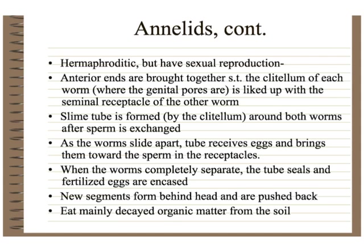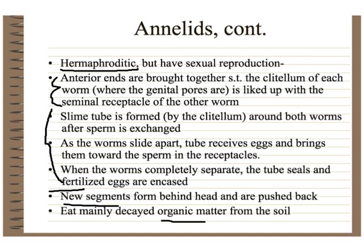Annelids are hermaphroditic but do reproduce sexually — they have both male and female parts, but they have to exchange sperm to reproduce and cannot fertilize themselves. In terms of growth, new segments form behind the head and get pushed back. These guys eat mainly dead organic matter from the soil, so they actually make soil — most soil has passed through an earthworm's gut — and they enrich the soil by adding more organic material.